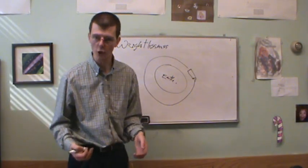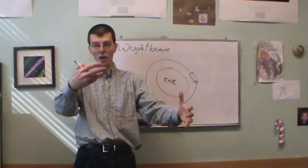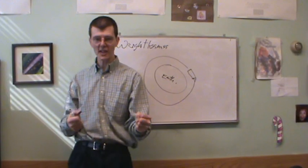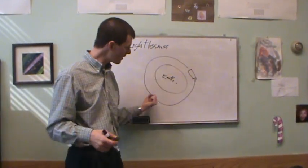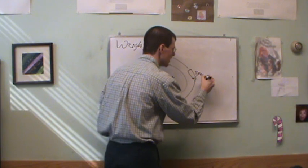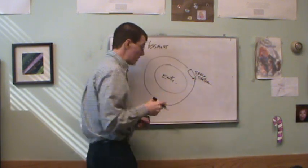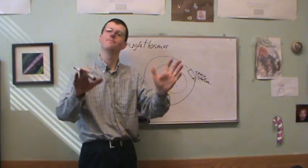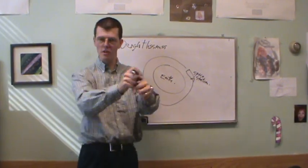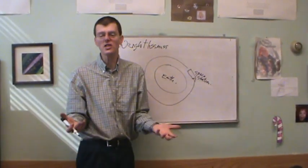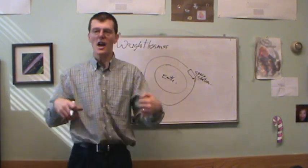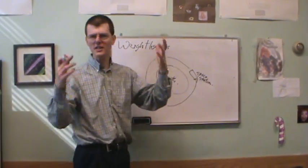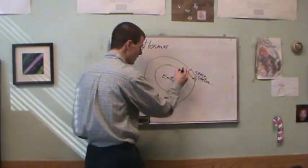So then people say gravity depends on distance squared — the farther from Earth, the weaker gravity is, so the astronauts must be so far away that gravity is fantastically weak. But that's also wrong. The space station orbits only a couple hundred miles up — very, very close to the Earth. The altitude where the space station orbits is nowhere near far enough to make gravity negligible.